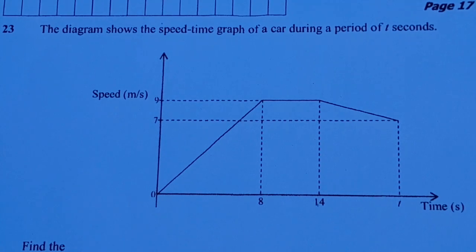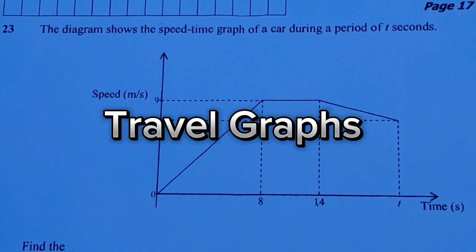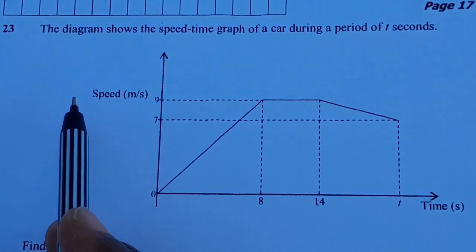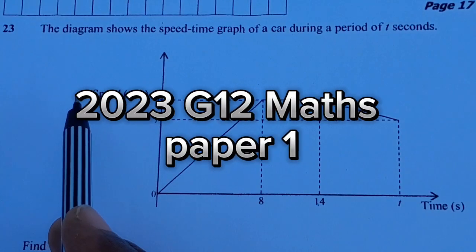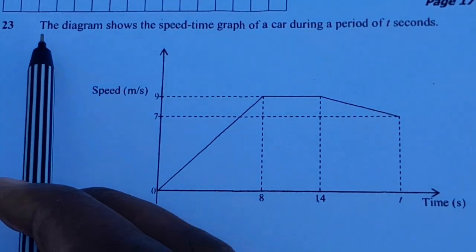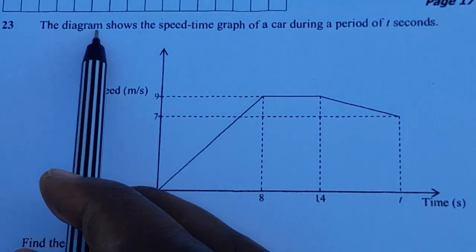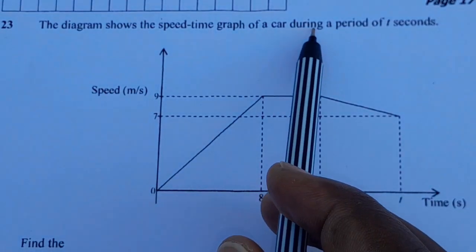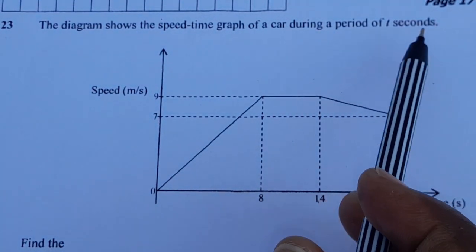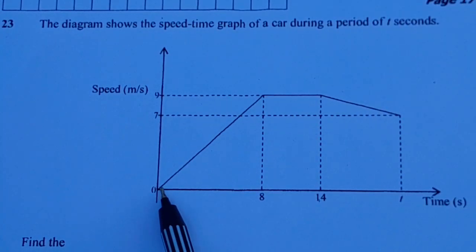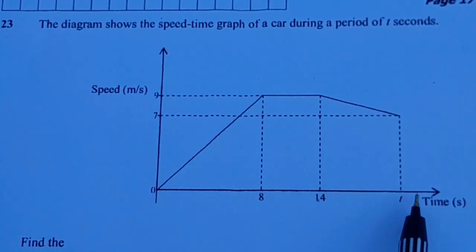In this video, we're going to look at travel graphs based on question 23 of the 2023 Grade 12 Mathematics Paper 1. The question reads: the diagram shows the speed-time graph of a car during a period of 10 seconds. You can see that this was the journey of the car for the period of 10 seconds.